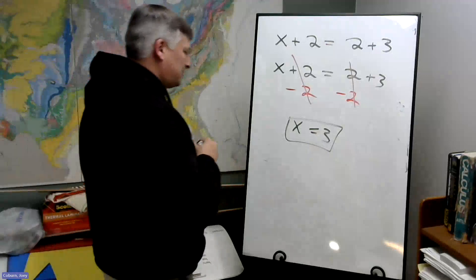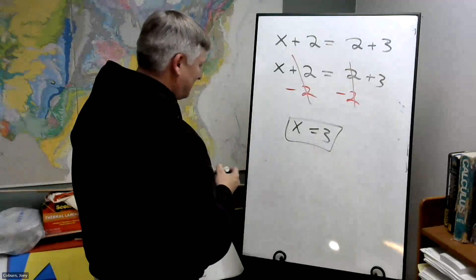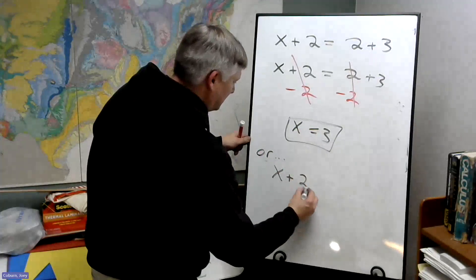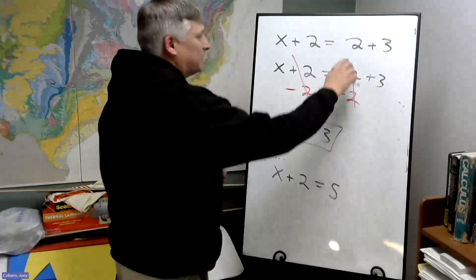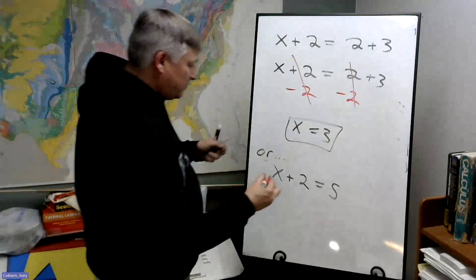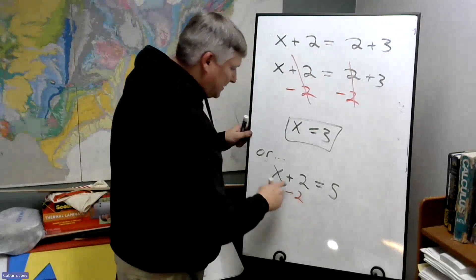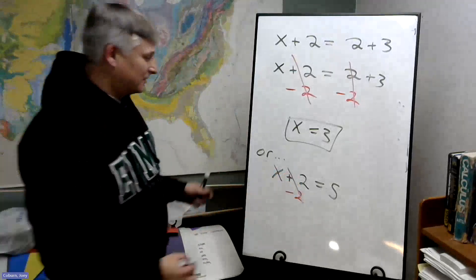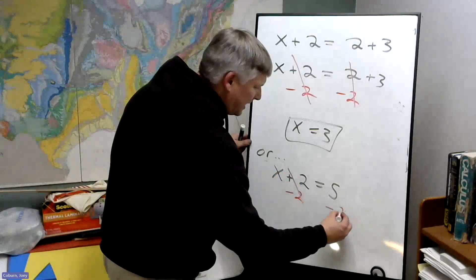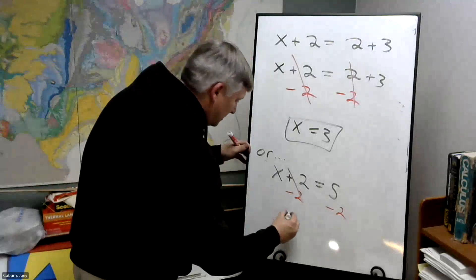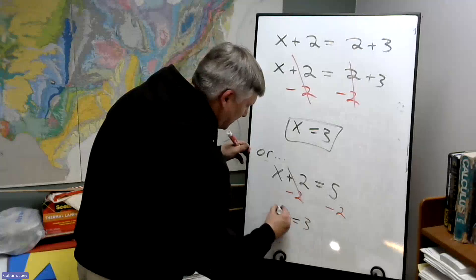Another way we could have done this, we could have written this as X plus two equals five. We could have added the two plus three and just the same. We'll remove two pounds and the opposite of adding is subtracting. So that goes away leaving X. But what we did on one side, we've got to do to the other. So five subtract two, that's three. And we get X equals three.